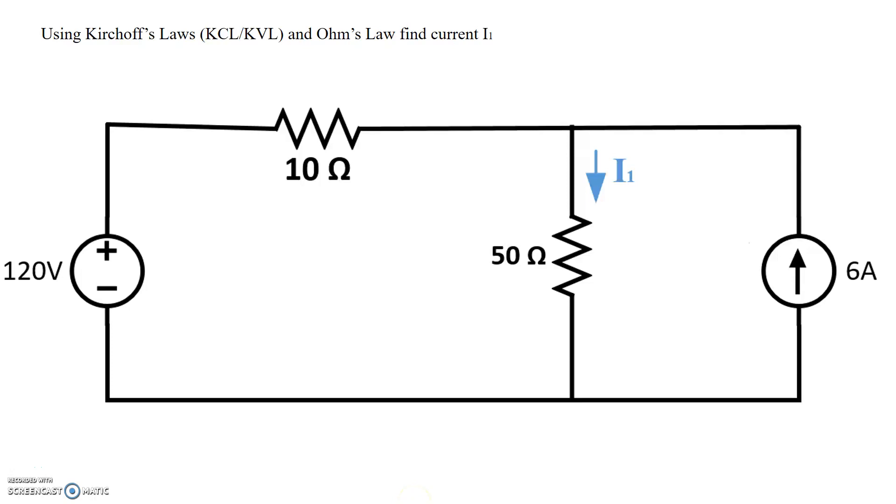In this example, we will use Kirchhoff's current laws, Kirchhoff's voltage law, and Ohm's law to find a current in the circuit. In this case, particularly the current to the 50 ohm resistor, which is shown as current I1. So here's a circuit with 120 volt and a 6 amp supply, and two resistive elements, 10 ohm and 50 ohm.